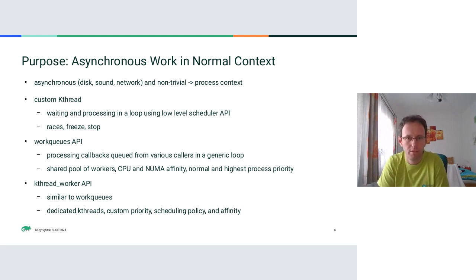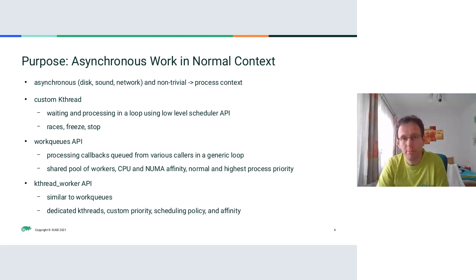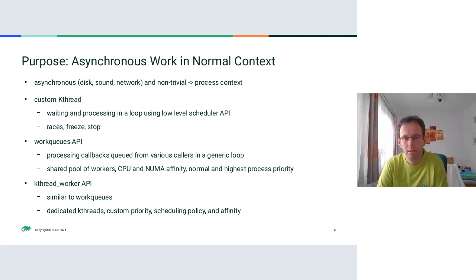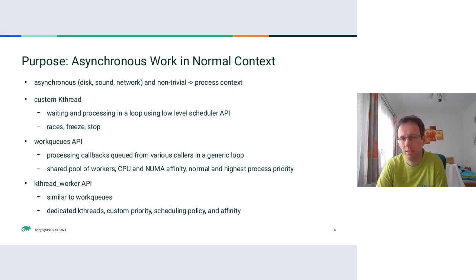A very old solution was soft interrupts, but that's not a good context because it can be scheduled and has other issues. The right solution involves real processes. The kernel is able to create its own processes called kthreads. You could implement your own — there is an API for this — and it's usually a main loop where the kthread waits for something to do, processes it, and then waits again.